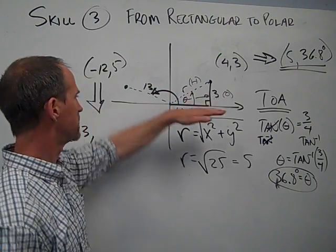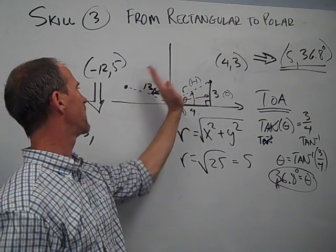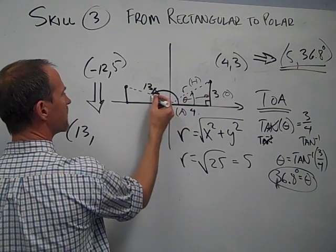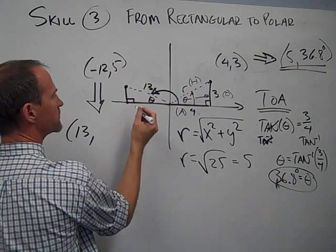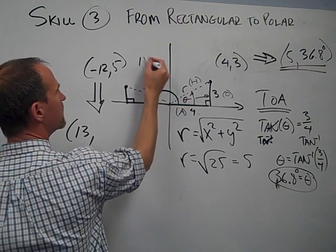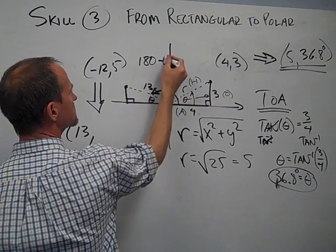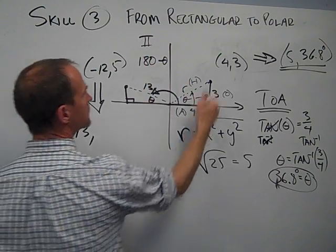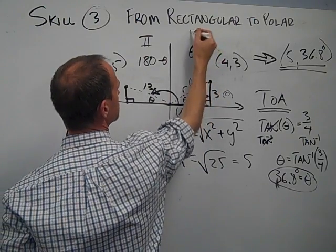Well, to find that angle of rotation from the horizontal all the way around past 90 to there, what I will actually do is find this angle here theta based on this right triangle, and then it's going to be 180 degrees minus that theta when I'm in the second quadrant. In this quadrant, it's just theta for the first quadrant.